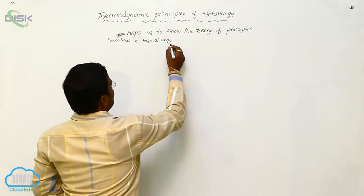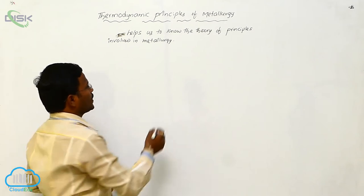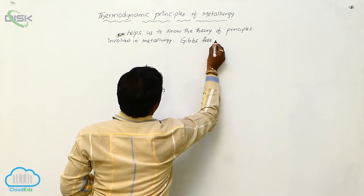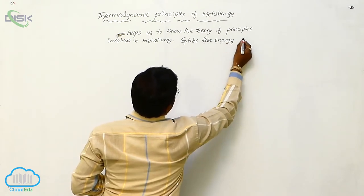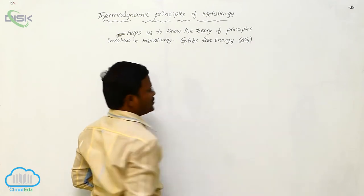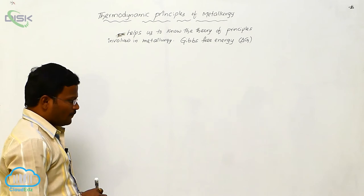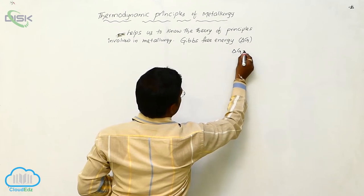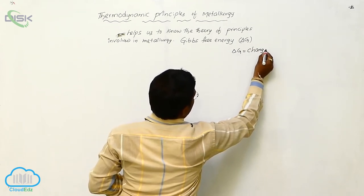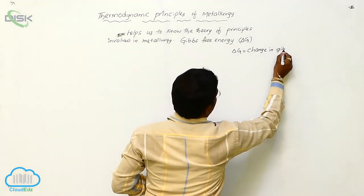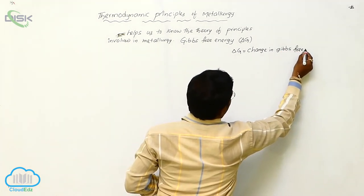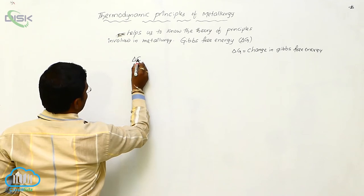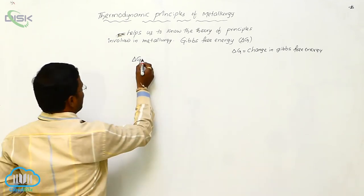The most important factor in thermodynamics is Gibbs free energy, which is indicated with Delta G. The change in Gibbs free energy — Delta G — can be derived according to thermodynamic laws.